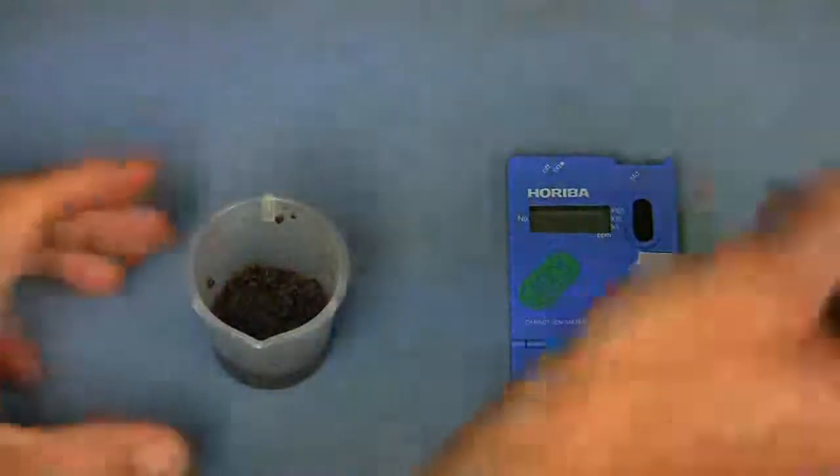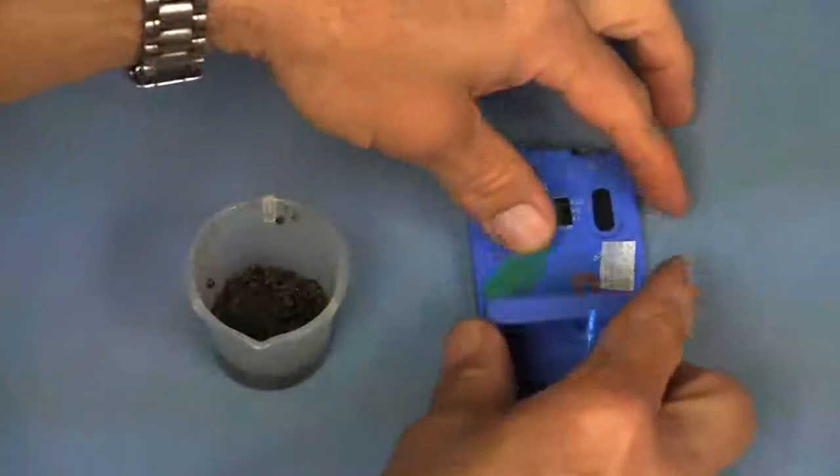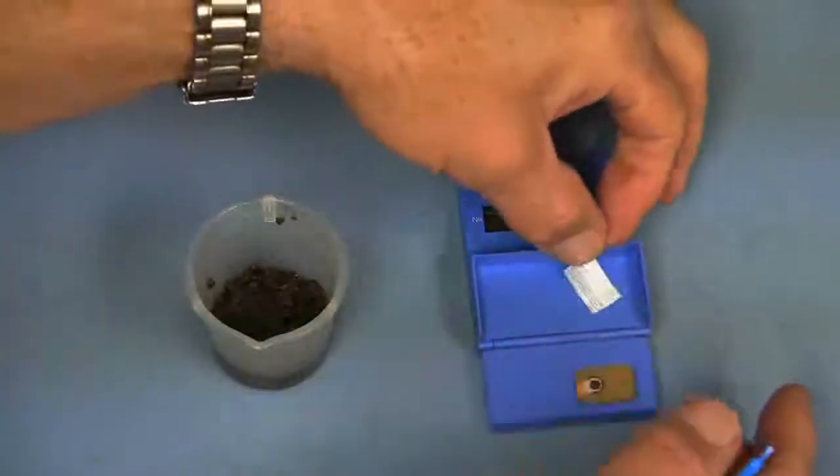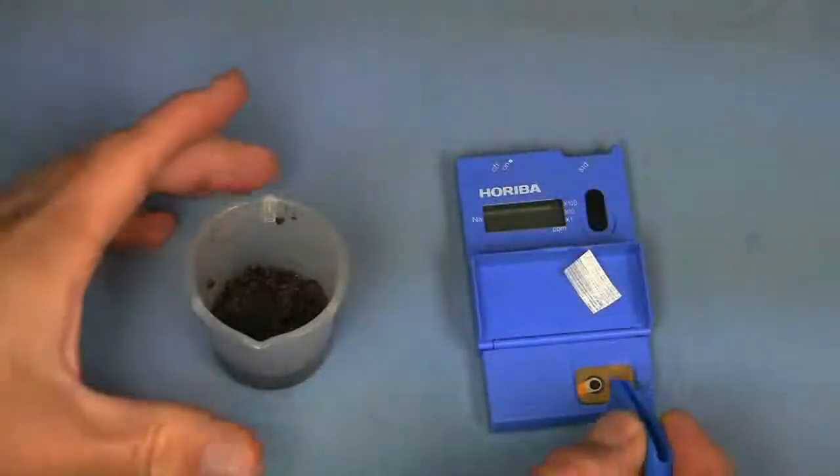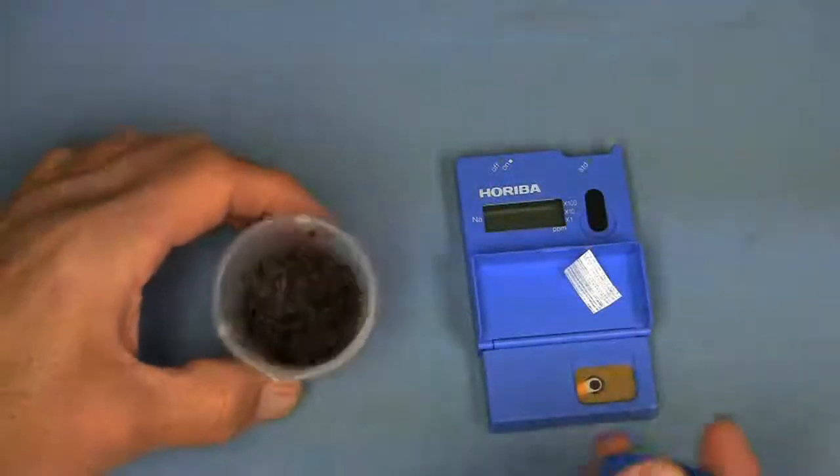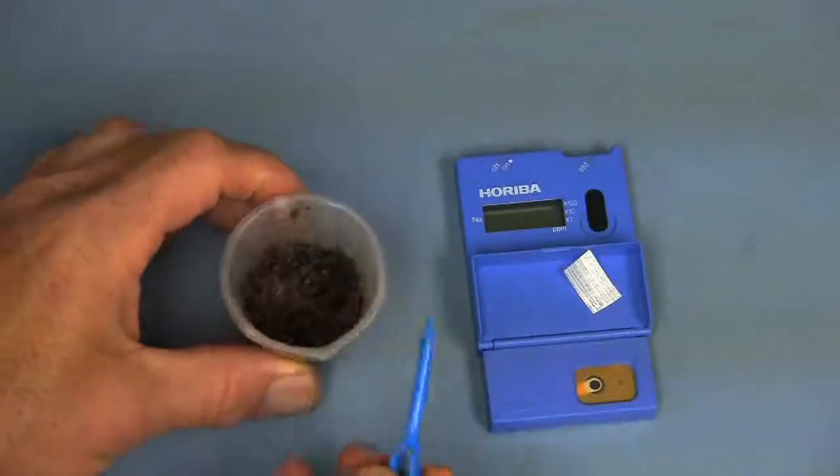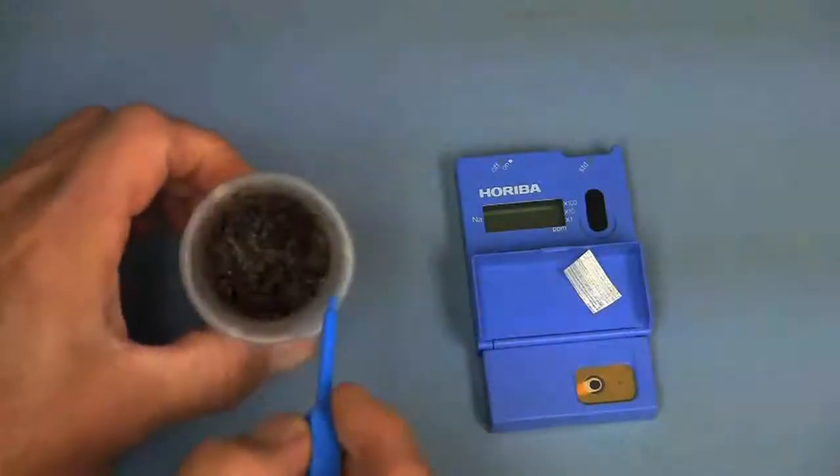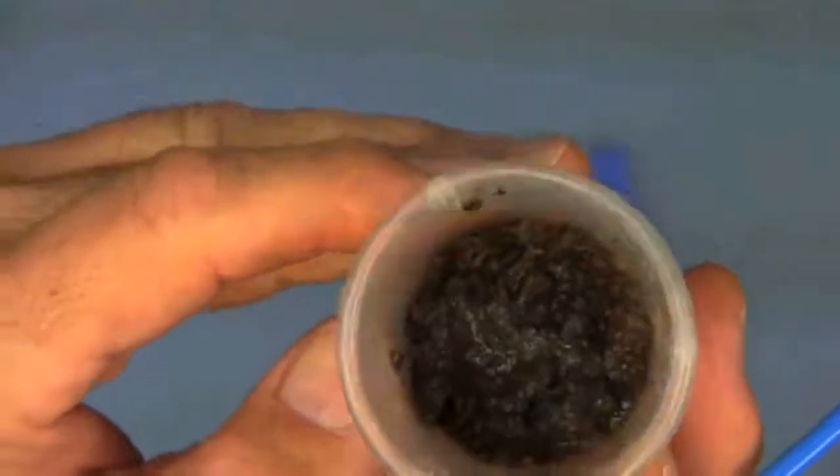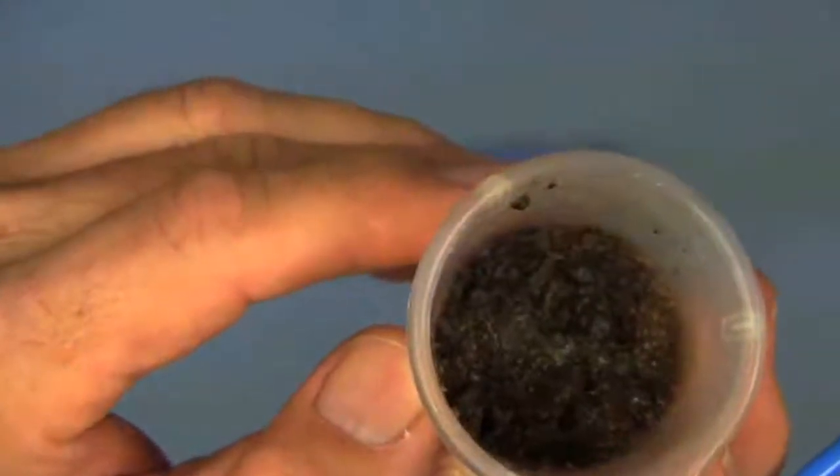Okay, well here's the setup. This is the meter. It opens up to expose the sensors, the sodium sensor down the bottom. And then we've made a saturated paste extract. You can see it glistens. There's no water at the top of that sample at all, but it's just got a little bit of a glistens to the sample.